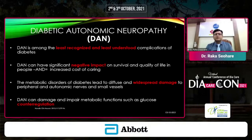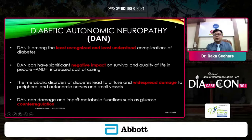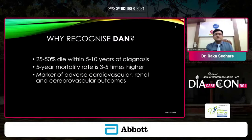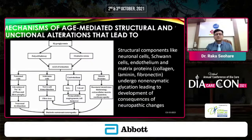Diabetic autonomic neuropathy is the least recognized and least understood complication of diabetes. It can have a significant negative impact because it increases the cost of care enormously and outcomes become unpredictable. There is widespread damage — peripheral and autonomic nerves are involved, small vessels are involved, and it impairs metabolic functions including glucose counter-regulation. This makes diabetes brittle. Importantly, 25 to 50% of these patients die within 5 to 10 years of diagnosis, with a very high 5-year mortality rate.